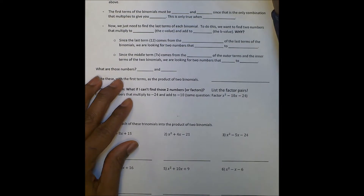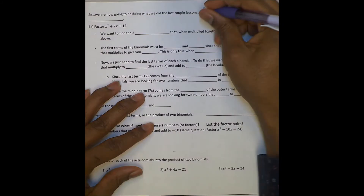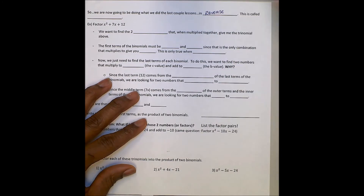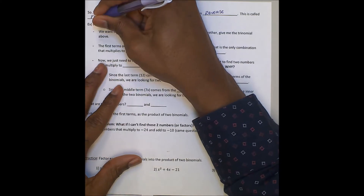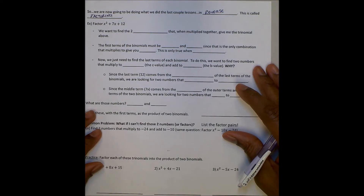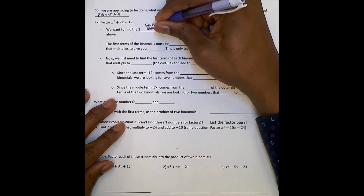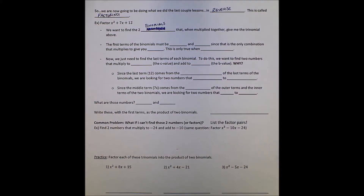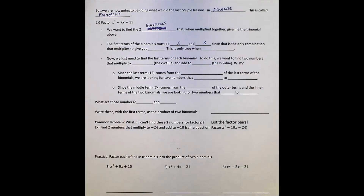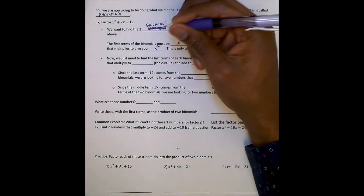Now what we're going to do is the opposite of what we did in the last couple lessons — this is called factoring. It's basically the opposite of multiplying binomials. The first terms in the binomials must be X and X, because that's the only combination that multiplies to give you X squared. This is only true when A equals 1, which is why the title is factoring when A is 1.